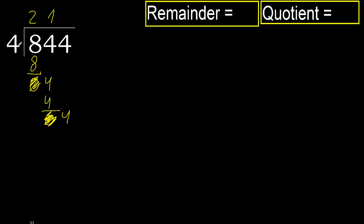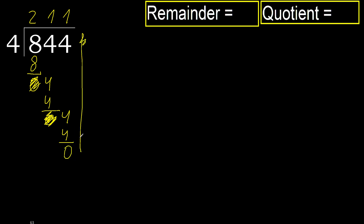Bring down: multiply by 1 is 4, which is not greater. Subtract, 0. Next — there is no more number, therefore finish it.